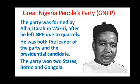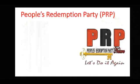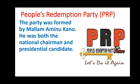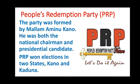The People's Redemption Party — you can see their logo. The PRP was formed by Mallam Aminu Kano. He was both the national chairman of the PRP and also the presidential candidate. The PRP won two states in the gubernatorial elections: Kano and Kaduna. In Kaduna, of course, we can remember Balarabe Musa, who had issues with the legislature and couldn't form his cabinet.